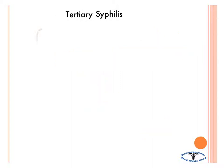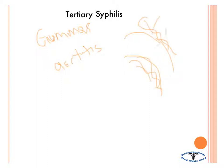Tertiary syphilis consists of gummas all over, which are basically granulomatous reactions. You get aortitis because you get inflammation of the vasa vasorum — the smaller blood vessels feeding the rest of the aorta. If you knock these out, you can't feed the inner layers of the aorta, so you get an inflammation reaction. And then you see Argyll Robertson pupil, which accommodates but does not react. Another name for this is also prostitute pupil — it accommodates but does not react.